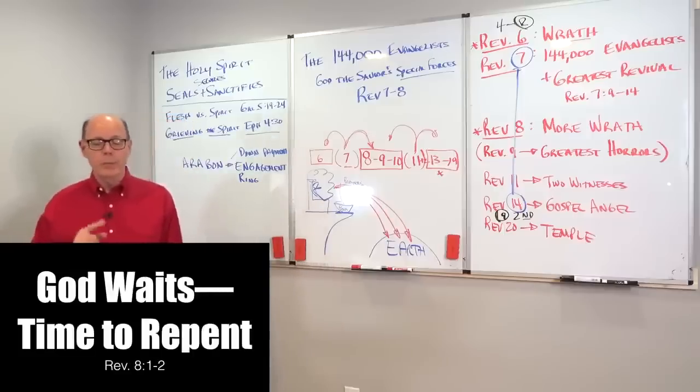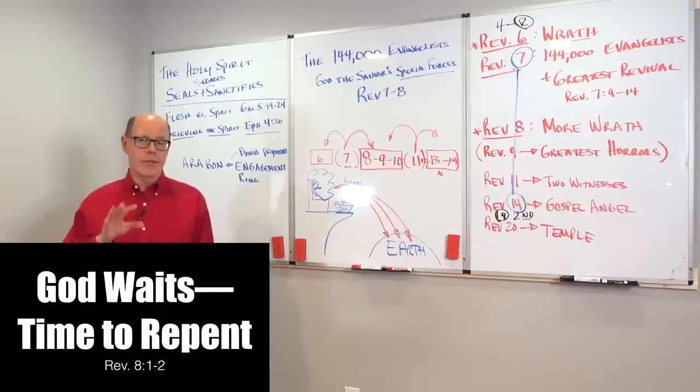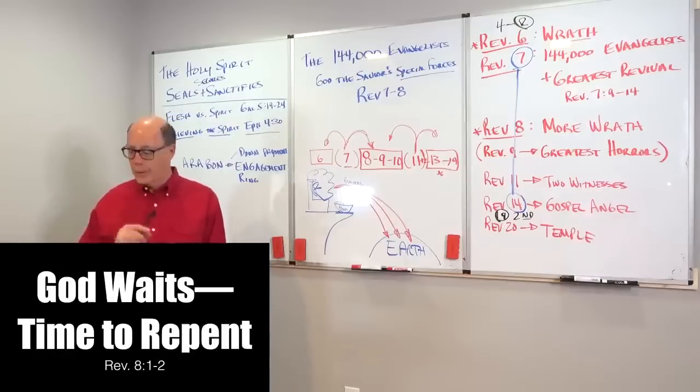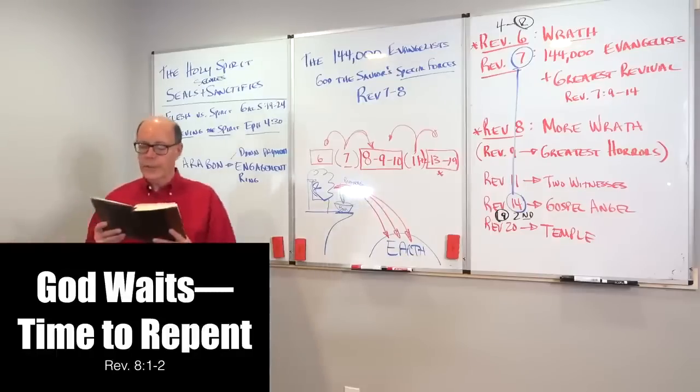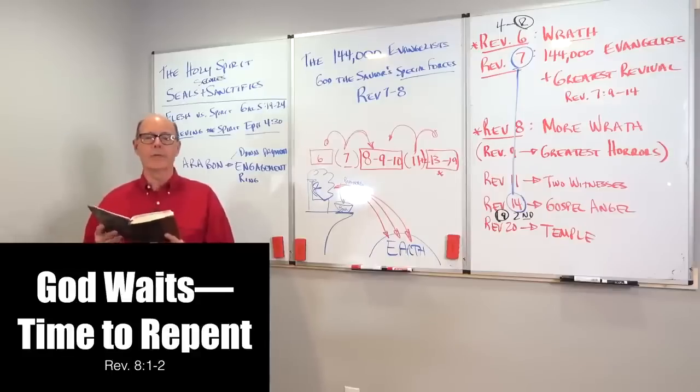But what's the first lesson? Romans 8, I mean, excuse me, Revelation 8, 1 and 2. What does that say? When you open the seventh seal, there was silence in heaven for a half an hour. And I saw the seven angels who stand before God, and to them were given the trumpets.